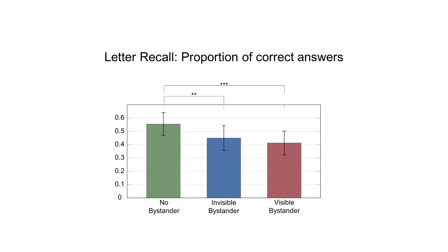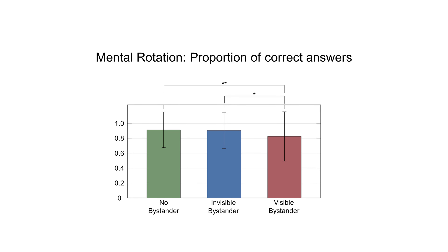Here you can see the proportion of correctly-remembered letter pairs with a 95% confidence interval. The differences were significant between the no-bystander and invisible-bystander conditions, as well as between no-bystander and visible-bystander. The results of the mental rotation tasks also indicated significant differences between the no-bystander and visible-bystander condition, and between the invisible-bystander and visible-bystander group.